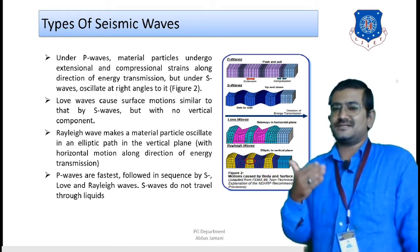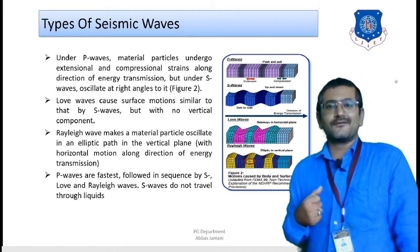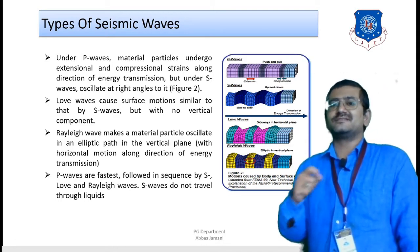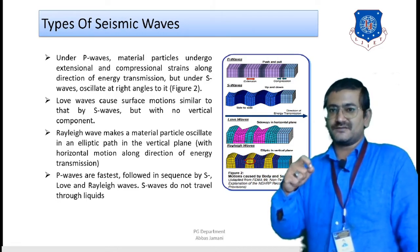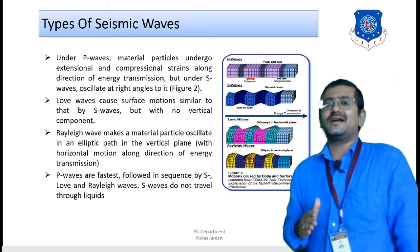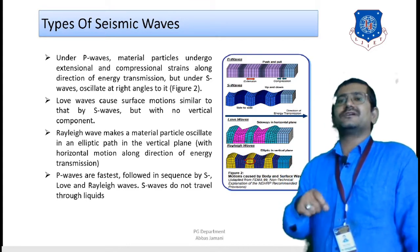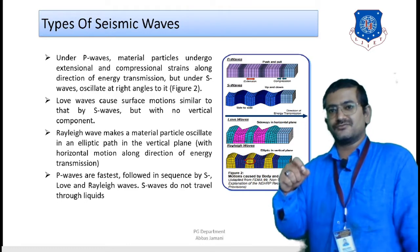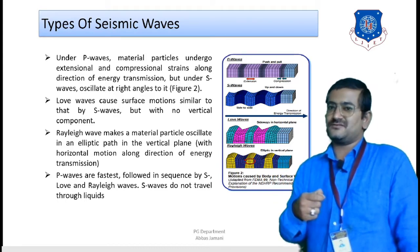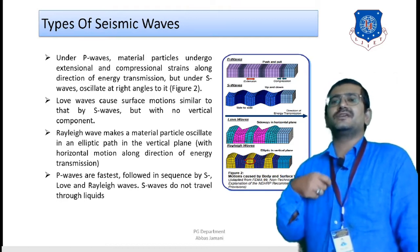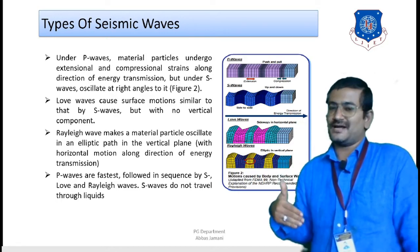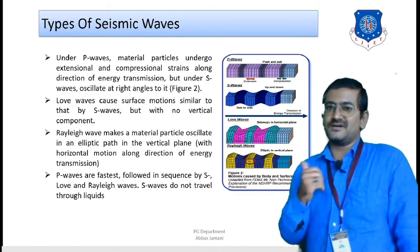Which wave is the fastest to reach the surface? P waves are the fastest, followed by S waves, then Love waves, and finally Rayleigh waves. There is also an important limitation for S waves: they cannot travel through liquid strata. If a liquid layer exists between the focus and the earth's surface, S waves will be reflected from that liquid strata and will not reach the surface. This is a significant limitation of S waves.